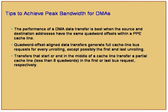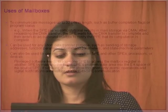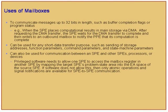Tips to achieve peak bandwidth: always use quad-word offset aligned data requests aligned on a 16-byte boundary. Mailboxes are always 32 bits in length — a really lightweight mechanism to query status, send error codes, return codes for program completion, or messages like 'I'm done, you start' or 'there's an error.' Any kind of 32-bit message can be sent via mailbox.